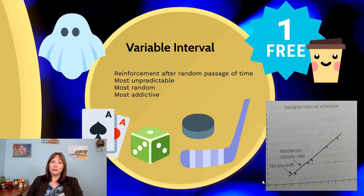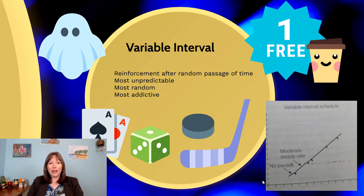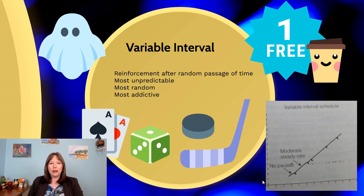The last type is the variable interval partial reinforcement schedule — the most random and often the hardest to understand and break habits from. It has nothing to do with the number of behaviors performed; it's about the passage of time, but that passage of time is random and changes every time you get reinforced. We don't know when the next win is coming, so we keep trying. With the coffee example, this is like someone in front of you randomly paying for your coffee — totally unpredictable.